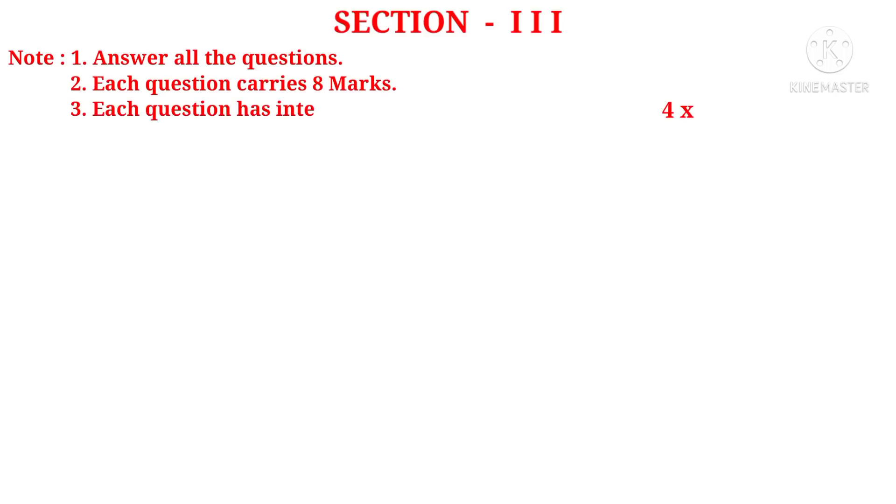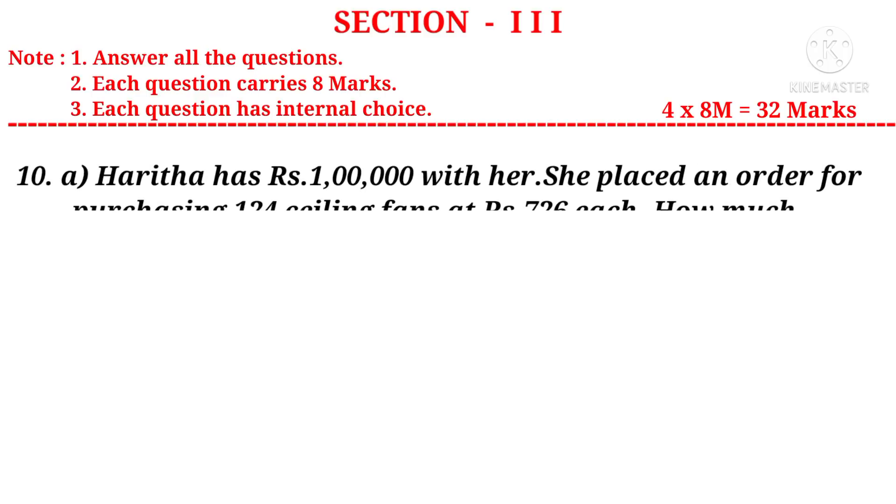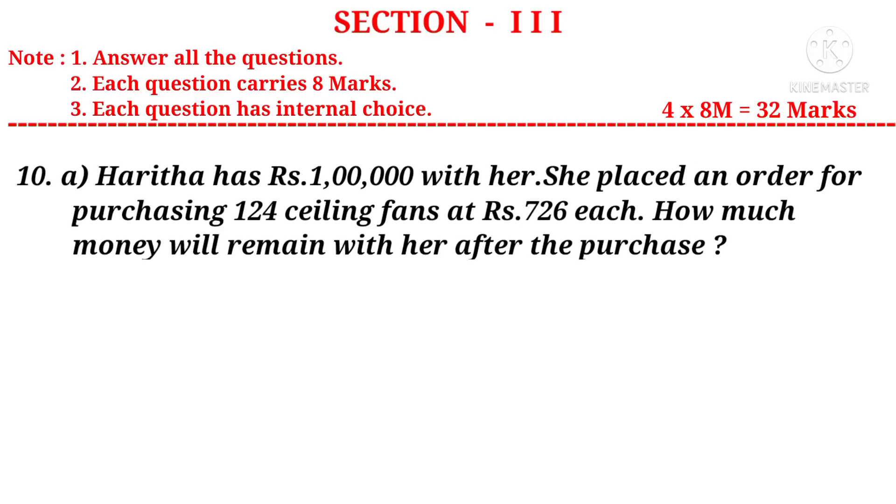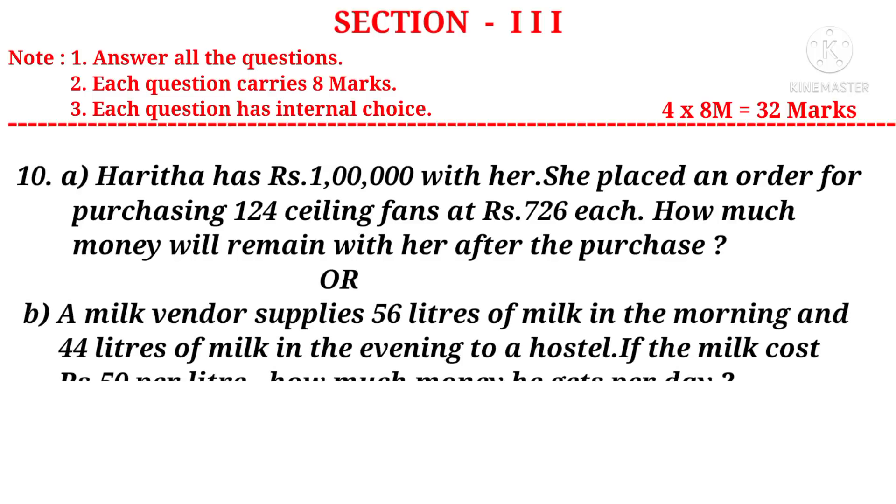Now let us see section 3. Note, answer all the questions. Number two, each question carries 8 marks. Number three, each question has internal choice. There are four questions, so 4 into 8 marks is 32 marks. 10a: Haritha has 1 lakh rupees with her. She placed an order for purchasing 124 ceiling fans at Rs. 726 each. How much money will remain with her after the purchase? Or b: A milk vendor supplies 56 liters of milk in the morning and 44 liters of milk in the evening to a hostel. If the milk costs Rs. 50 per liter, how much money he gets per day?